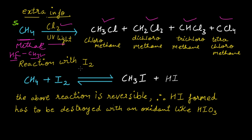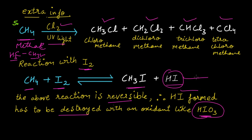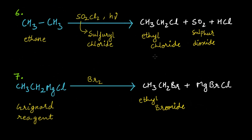When an alkane such as methane is treated with iodine, you get alkyl iodide (methyl iodide) and HI, but this is a reversible reaction. The HI formed has to be destroyed with an oxidant like HIO₃ to remove it so that the reaction moves in the forward direction. Otherwise, the products react again to give I₂, because iodine prefers to make I₂ — remember this.